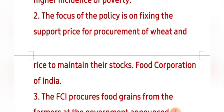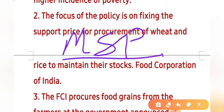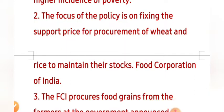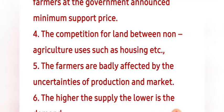The focus of the policy is on fixing the support price for procurement of wheat and rice to maintain their stocks. This policy is based on the Minimum Support Price (MSP). The Food Corporation of India (FCI) procures food grains from the farmers at the government-announced Minimum Support Price.